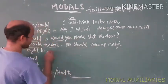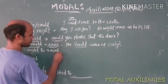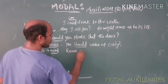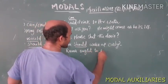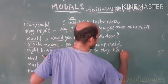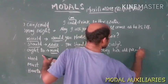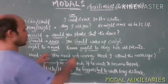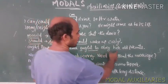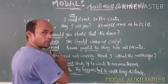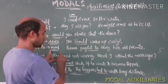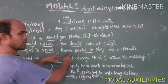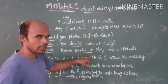Now we come to ought to. Ought to tells about morality and moral responsibility. For example: 'Rama ought to obey her old parents.' This expresses a moral obligation — it is Rama's moral duty and moral responsibility to obey her parents. That is why we use ought to here.